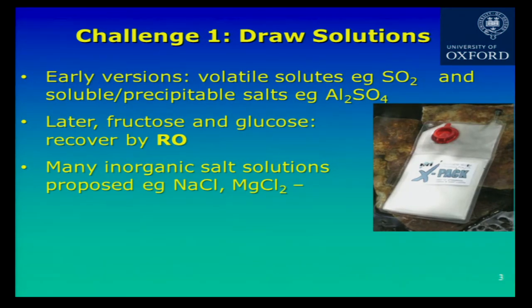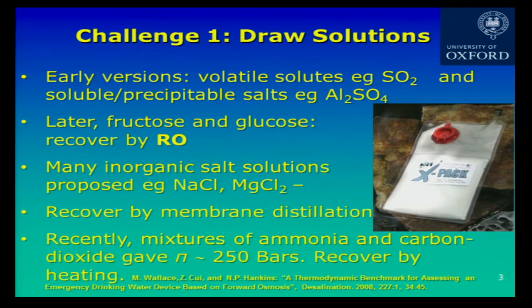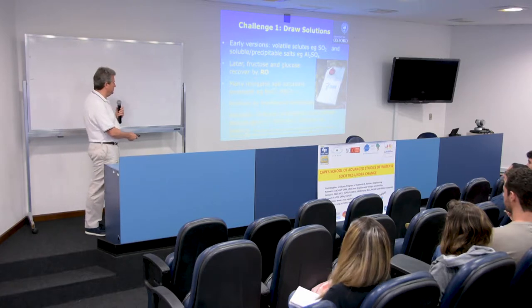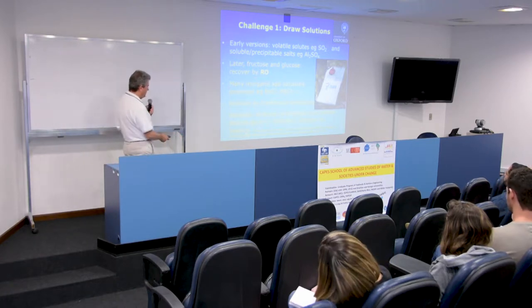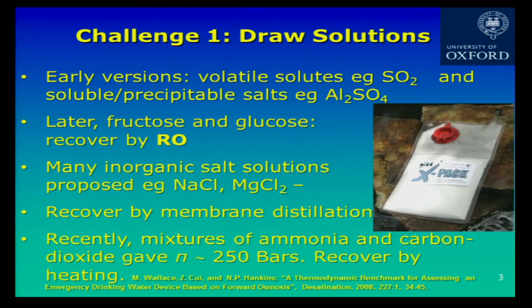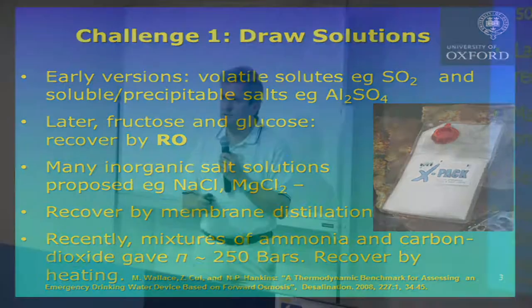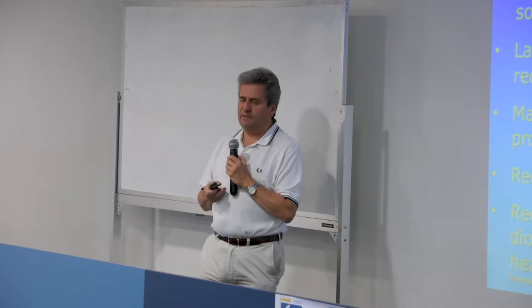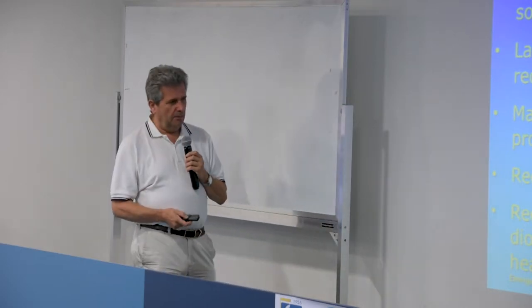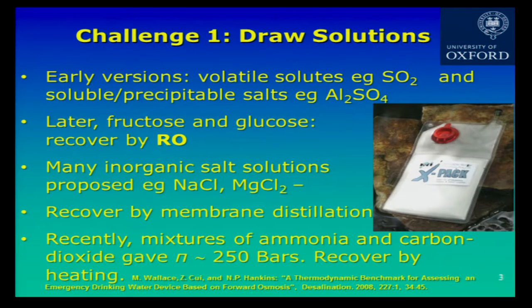If you use this in a continuous system, you have to remove the fructose and glucose; that draw solution was recovered using reverse osmosis at quite low energy. There have been many different kinds of inorganic salt solutions — sodium chloride and magnesium chloride — and they can be recovered by membrane distillation. Recently, work at Yale University has been recovering mixtures of ammonia and carbon dioxide, giving very high osmotic pressures up to 250 bars. These can be recovered by heating, using very small changes in temperature to bring about big changes in solubility, with those small temperature changes achieved using waste heat.